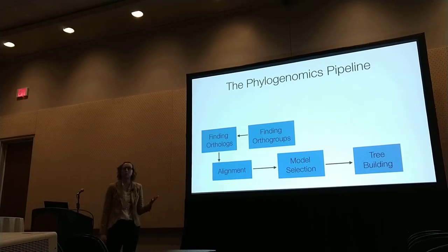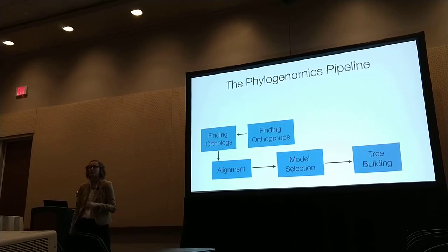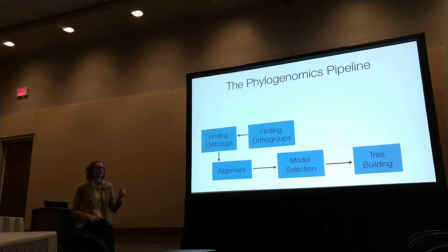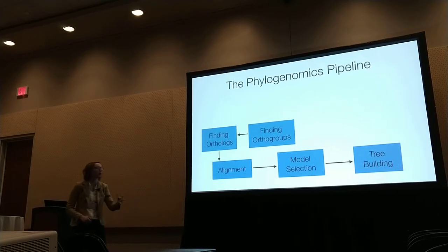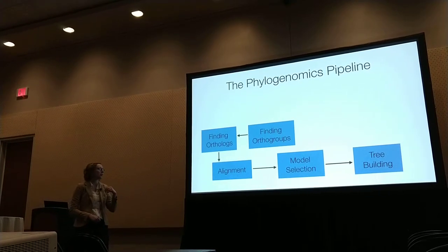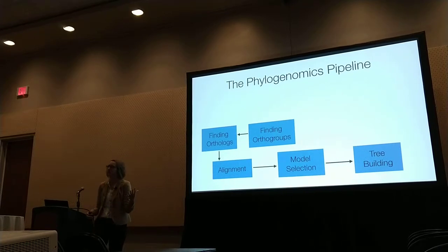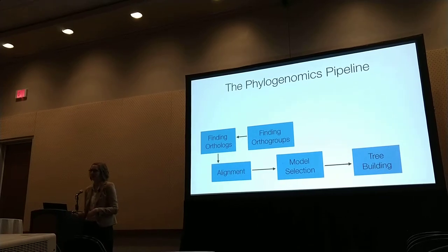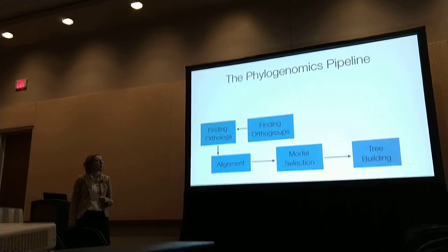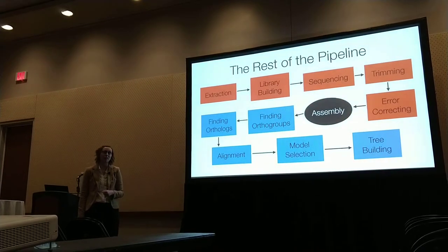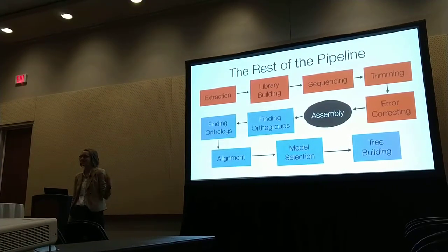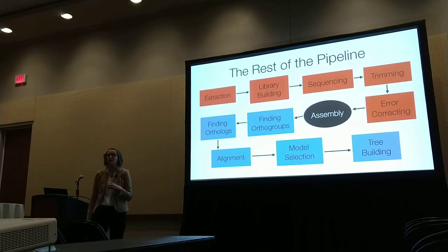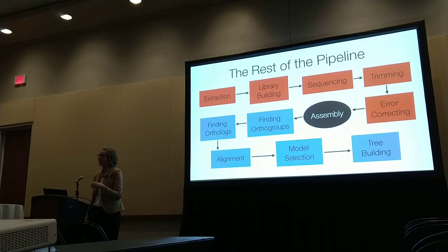This is a phylogenomics pipeline that we've talked about a lot. We find orthogroups, pull orthologs out of those groups, then build an alignment. We often spend a lot of time and energy thinking about model selection, as we should. And the tree-building process itself is not necessarily straightforward. But I'm here to remind everybody that there's actually a lot more included in this pipeline — this is not an exhaustive list — and at every single stage we have the opportunity to introduce biases and errors into our phylogenetic inferences.